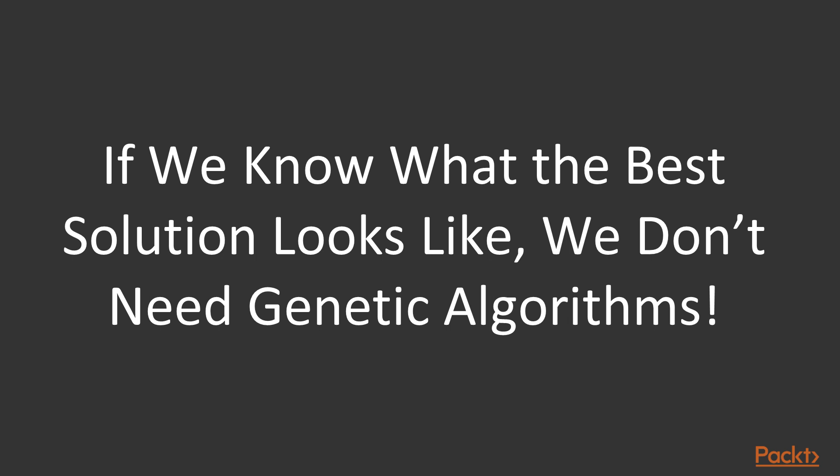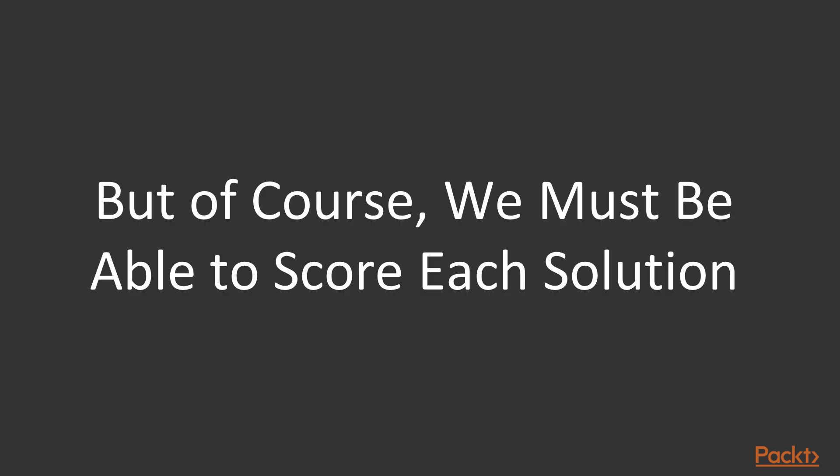We'll never know if we found the best one. But of course, we must be able to score each solution to know which ones are better. We'll take the best two we have and produce an offspring and see if it's better than the parents, and so on. So we cannot use a genetic algorithm if we can't produce a score for the fitness of individuals — producing a score is an essential requirement.